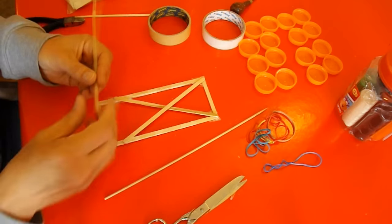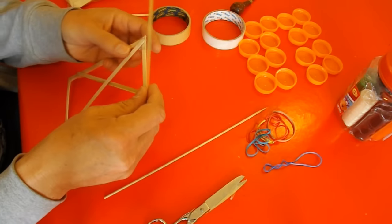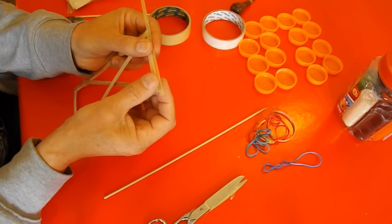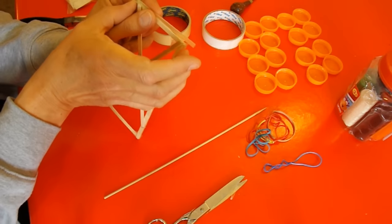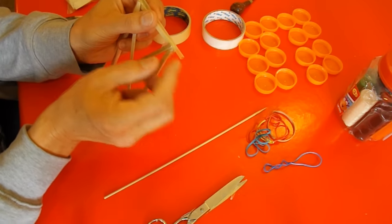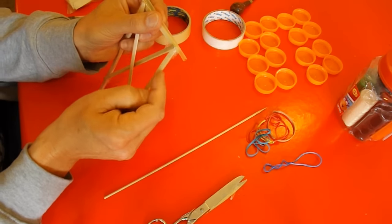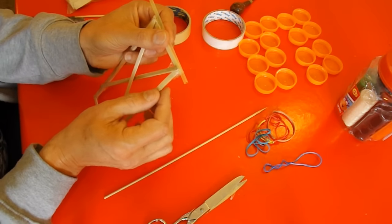So, drinking straw. You need it to be longer than the width of your car because you need the wheels to stay away from the edge of the car. You don't want them to rub on it.